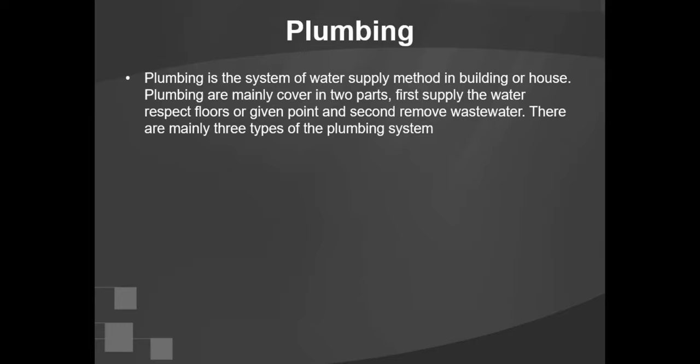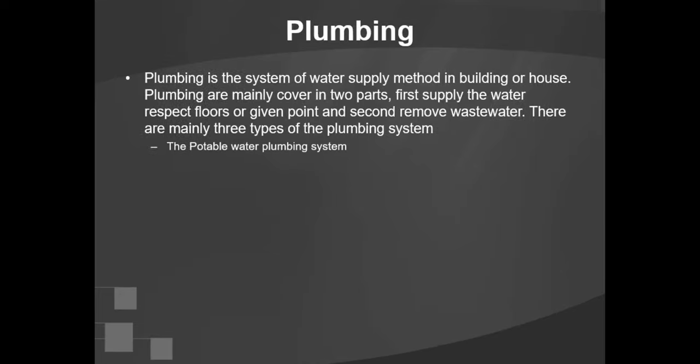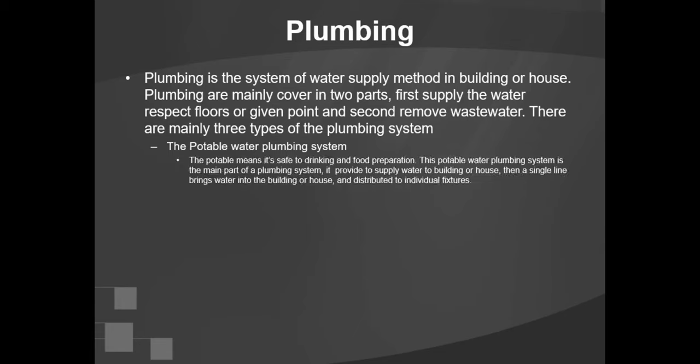There are mainly three types of plumbing system. The first one is the potable water plumbing system. Potable means it is safe for drinking and food preparation. This potable water plumbing system is the main part of a plumbing system. It provides water supply to a building or house, and a single line brings water into the building and distributes it to individual fixtures.